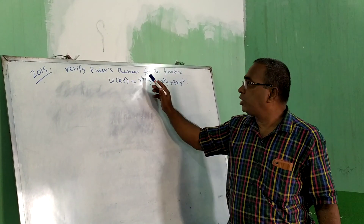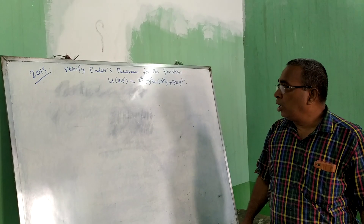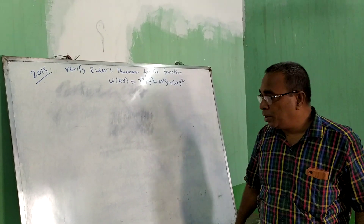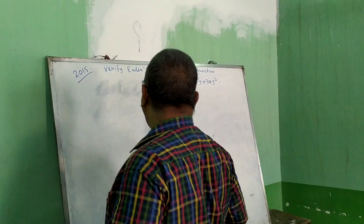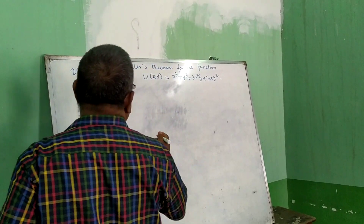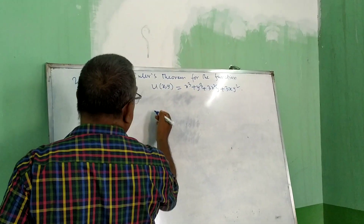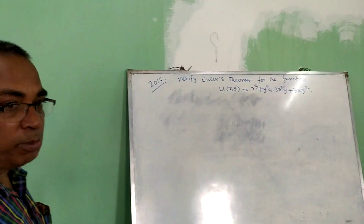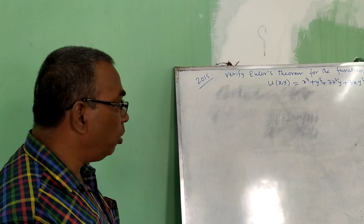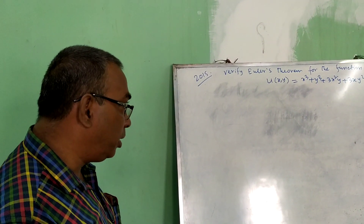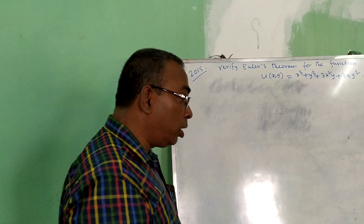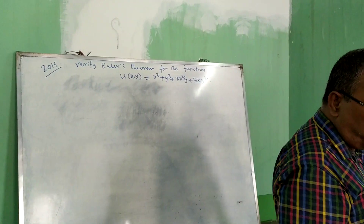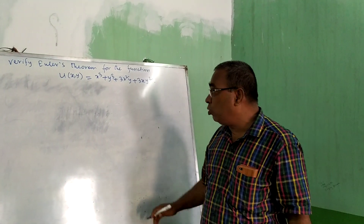So verify Euler's theorem for the function. U(x,y) is equal to this. Firstly, I am showing whether it is a homogeneous function or not — whether the function is homogeneous or not. I have already told you this in my previous video.